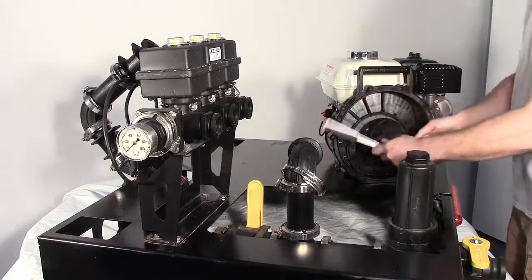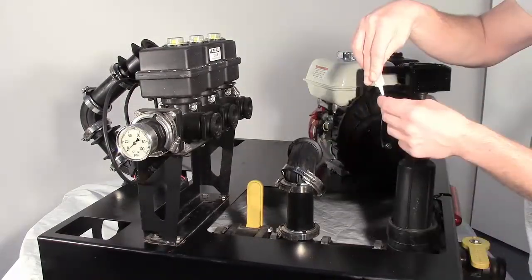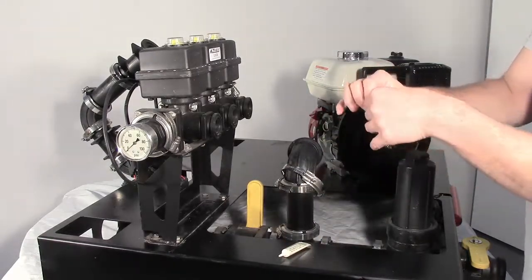Install the impeller key shaft and impeller onto the engine drive shaft. Apply a light coating of dielectric grease to the O-ring segment. This will help keep it in place as you install it onto the rear bracket housing.